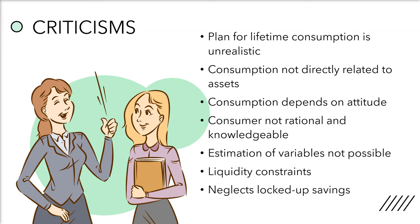Thirdly, consumption depends on attitude. Consumption depends upon one's attitude towards life. Given the same income and assets, one person may consume more than the other. The consumer is also not rational and knowledgeable. The hypothesis assumes that a consumer is rational and has full knowledge about his income as well as his future income, which is unrealistic because no consumer is fully rational and knowledgeable in the real world.